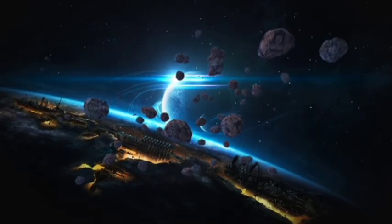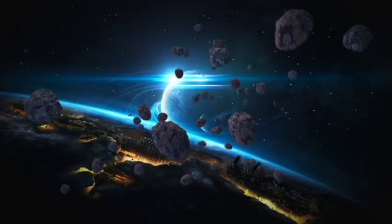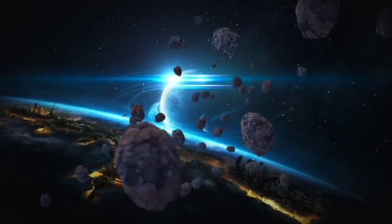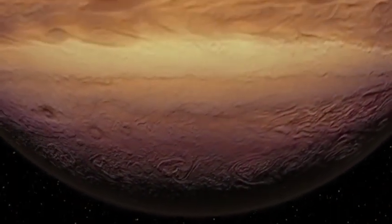Its year lasts just 112 Earth days, and it orbits much closer to its star than Earth does to the Sun. One side of the planet is constantly bathed in sunlight, while the opposite side remains in perpetual darkness.